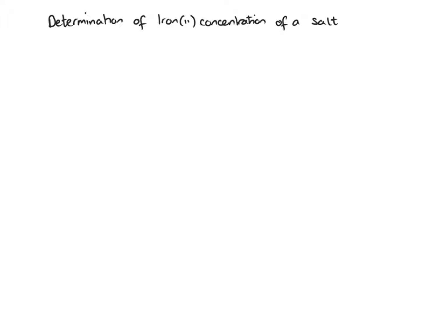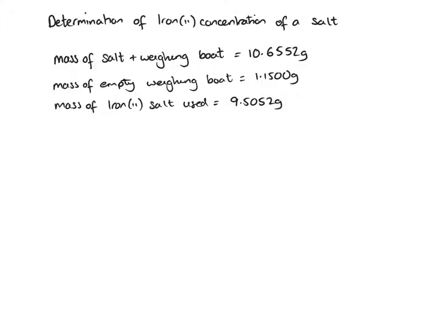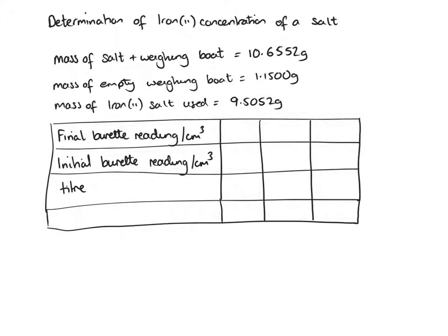Determination of iron 2 concentration of a salt. The first thing you need to do is make sure your results are recorded really clearly. If your results are not clearly set out you are going to lose marks. It should be clear to whoever is looking at them what each number is. Same with your titration table — you should set that out before you start so it's easy to use. Make sure all values in your titration results table are to two decimal places.